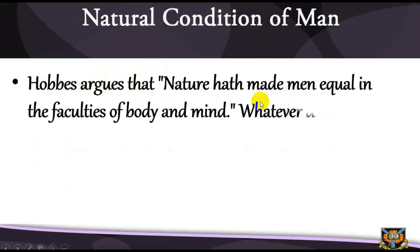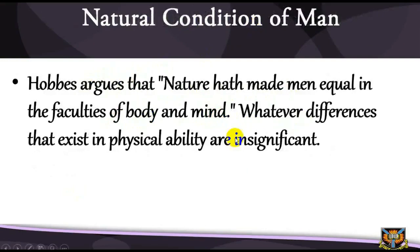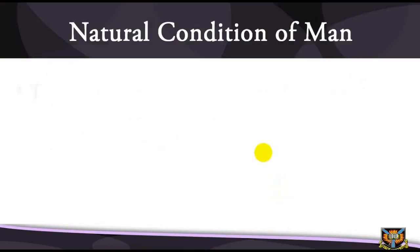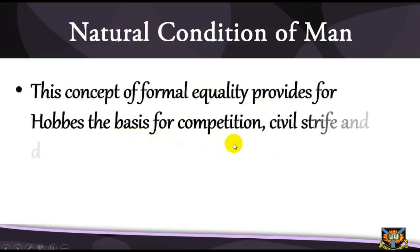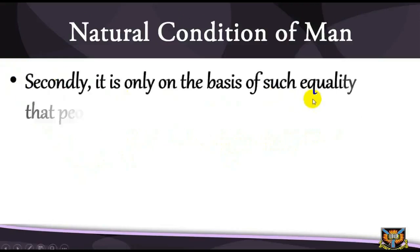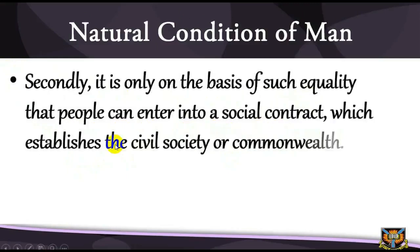Natural condition of man: Hobbes argues that nature has made men equal in the faculties of body and mind, and that whatever differences exist in physical ability are not significant. From this equality of ability arises equality of hope in the attaining of our ends. But where both men desire the same thing, equality of hope leads to enmity, and where one of them is victorious he finds it difficult to keep his gain from others. This concept of formal equality provides for Hobbes the basis for competition, civil strife and disorder. Secondly, it is only on the basis of such equality that people can enter into a social contract, which establishes the civil society or commonwealth. Thus the assumption of formal equality by him is quite deliberate.